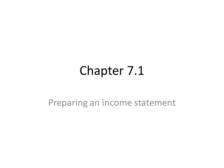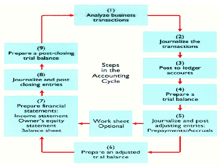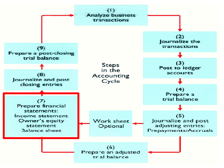Welcome back. Chapter 7.1. We're going to be preparing an income statement today. Where we're at in the accounting cycle, we've gone through steps 1 through 6. We've analyzed the transactions, journalized the transactions, posted to the ledger, prepared the trial balance, journalized and posted the adjusting entry, and created a worksheet as we did in Chapter 6. Now we're at Step 7, where we're going to prepare the financial statements.